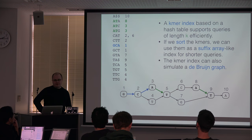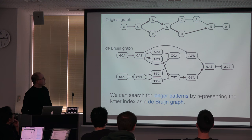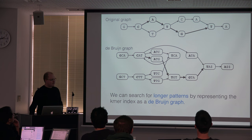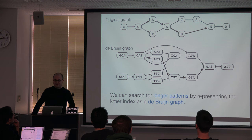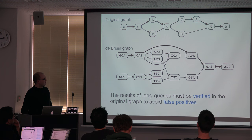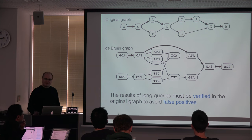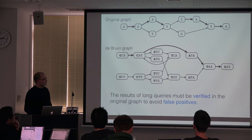The interesting thing about k-mer indexes of any kind is that we can use them to simulate de Bruijn graphs. If we look at the de Bruijn graph explicitly, all paths in the original graph — no matter how long — can be found in the de Bruijn graph. So we can use the k-mer index also for queries longer than k. The catch is that there are some paths that don't exist in the original graph, so if we look for paths longer than k, we must verify the results in the original graph afterwards — otherwise there may be false positives.